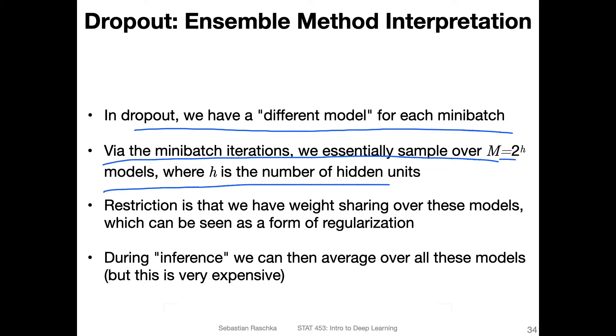Essentially, what we do is we sample over 2^h models, where h is the number of hidden units, if we only consider a hidden layer. If we have multiple hidden layers, this becomes even larger. But if you have a hidden layer with 10 units, you already have 2^10 possible combinations of hidden layers that you may sample during each forward pass. So in that way, it can be seen as a model ensemble.